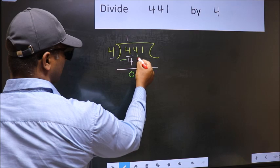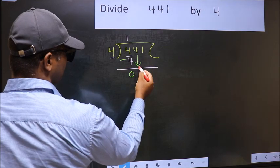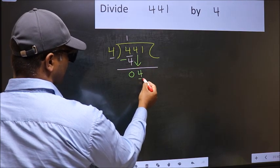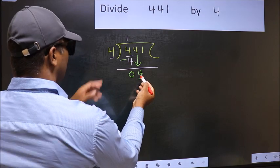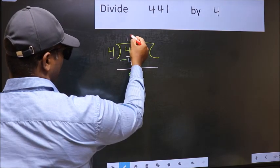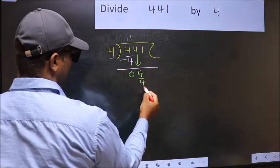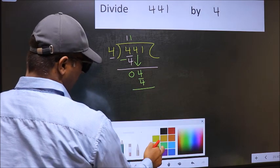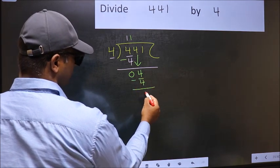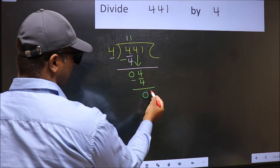After this, bring down the beside number. So, 4 down. Now, 4. When do we get 4 in 4 table? 4 once, 4. Now, you should subtract. 4 minus 4, 0.